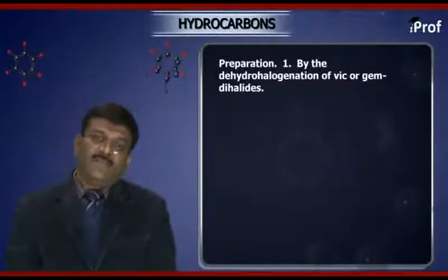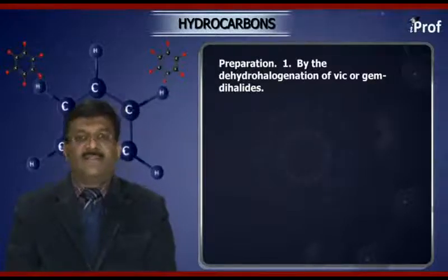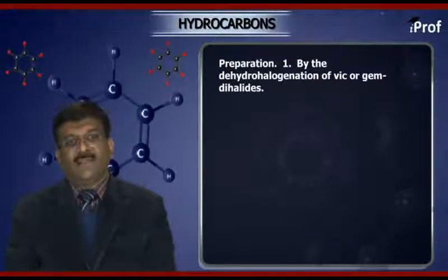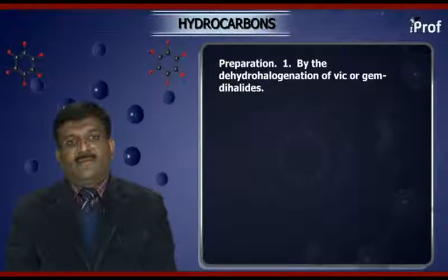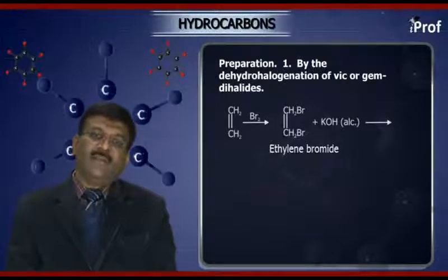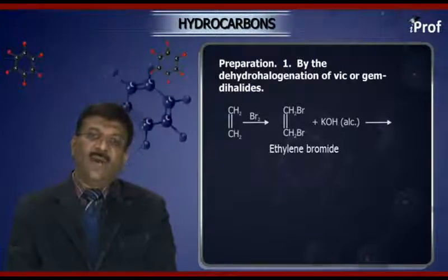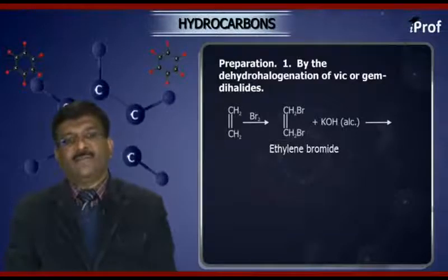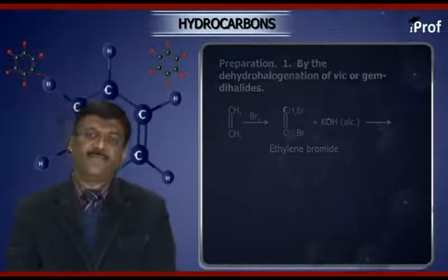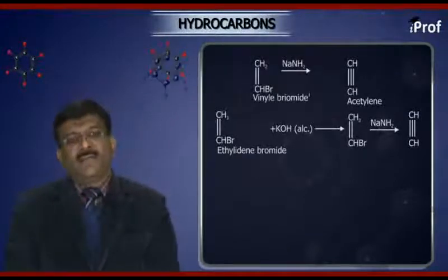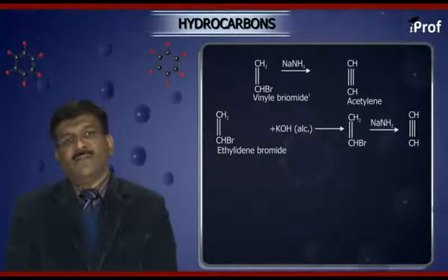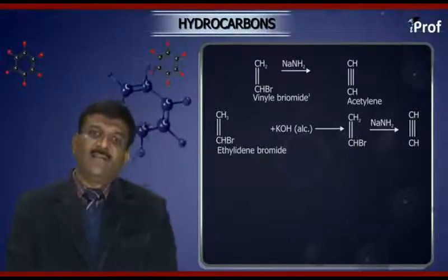Next, preparation. Alkynes may be prepared by the dehydrohalogenation of vic or gem dihalides. For example, when alkene is treated with bromine, it gives ethylene dibromide, which on further reaction with alcoholic KOH gives CH≡CH along with the formation of HBr. It further reacts to give CH2=CHBr — vinyl bromide — which on treatment with NaNH2 gives acetylene.